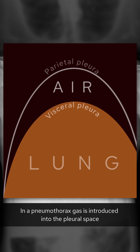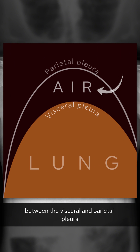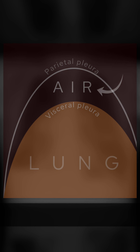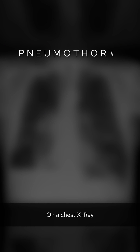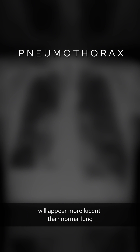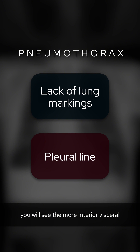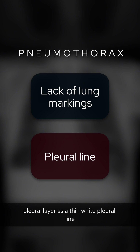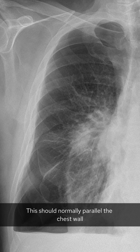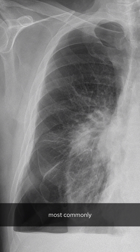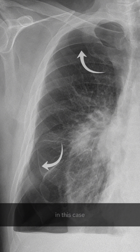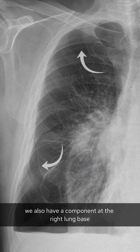In a pneumothorax, gas is introduced into the pleural space between the visceral and parietal pleura. On a chest x-ray, the pneumothorax will appear more lucent than normal lung with two key features. Number one, a lack of lung markings. And number two, you will see the more interior visceral pleural layer as a thin white pleural line. This should normally parallel the chest wall. Most commonly, you'll see this at the apex like you can here, whilst in this case, we also have a component at the right lung base.